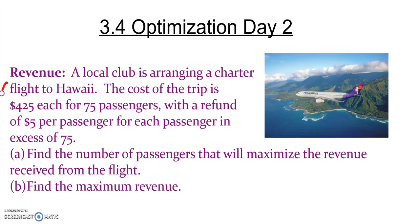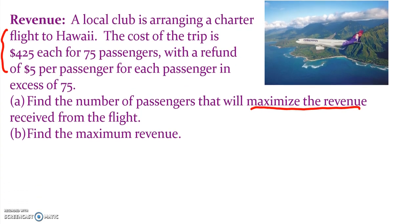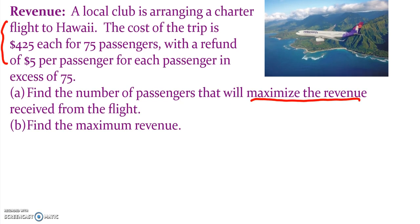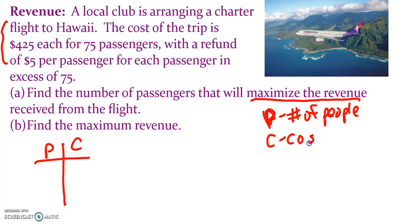So let's take this information and see what we're looking for when we're trying to maximize revenue here. A local club is arranging a charter flight to Hawaii. The cost of the trip is $425 each for 75 passengers, and a refund of $5 per passenger for anything over 75. So let's go ahead and just make some sort of chart detailing this. If I let P stand for the number of people, and C be the cost per person.